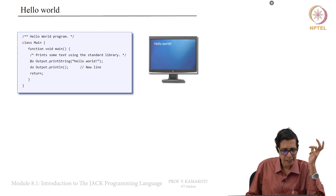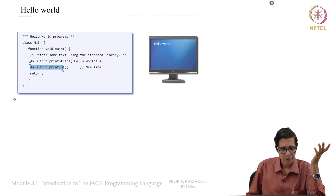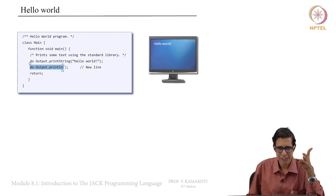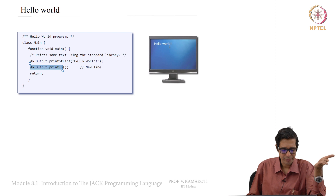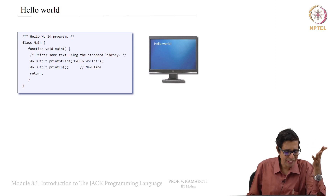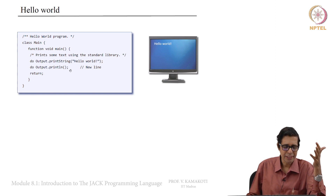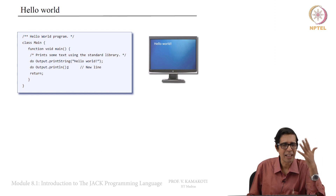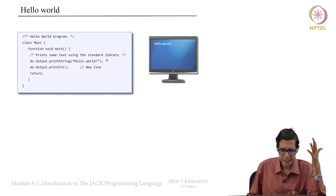Output dot printString is equivalent to your printf statement, and Output dot println is a newline character. The output when you compile this using the Jack compiler — available as part of your project — will be just 'hello world'. The entire Jack is based on classes. There is always a class called Main with capital M, inside which there must be a function void small main, and that is the first function that executes. To output anything, use do Output dot printString, and do Output dot println for a new line.